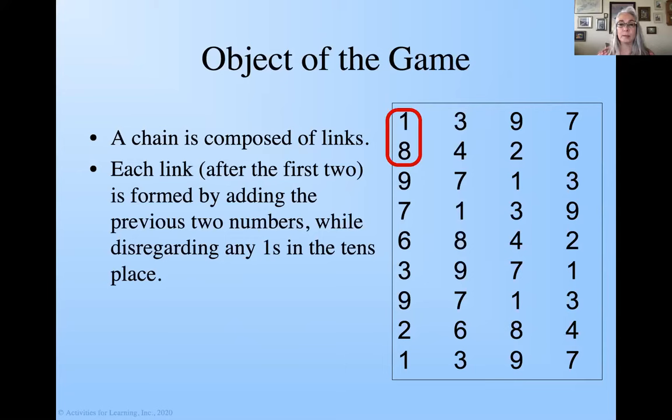So, I have 1 plus 8. 1 plus 8 is 9, which we have right there. Now, we'll take the next two. 8 and 9 is 17, but remember I said we're going to disregard the ones in the tens place, so we're going to kind of pretend that's not there, and so we have 8 and 9 make 7. Then we have 9 and 7. 9 and 7 is 16, so we just write the 6. 7 and 6, 13. Just write the 3. 6 and 3 is 9. 3 and 9 is 12. 9 and 2 is 11, so we just write the 1.